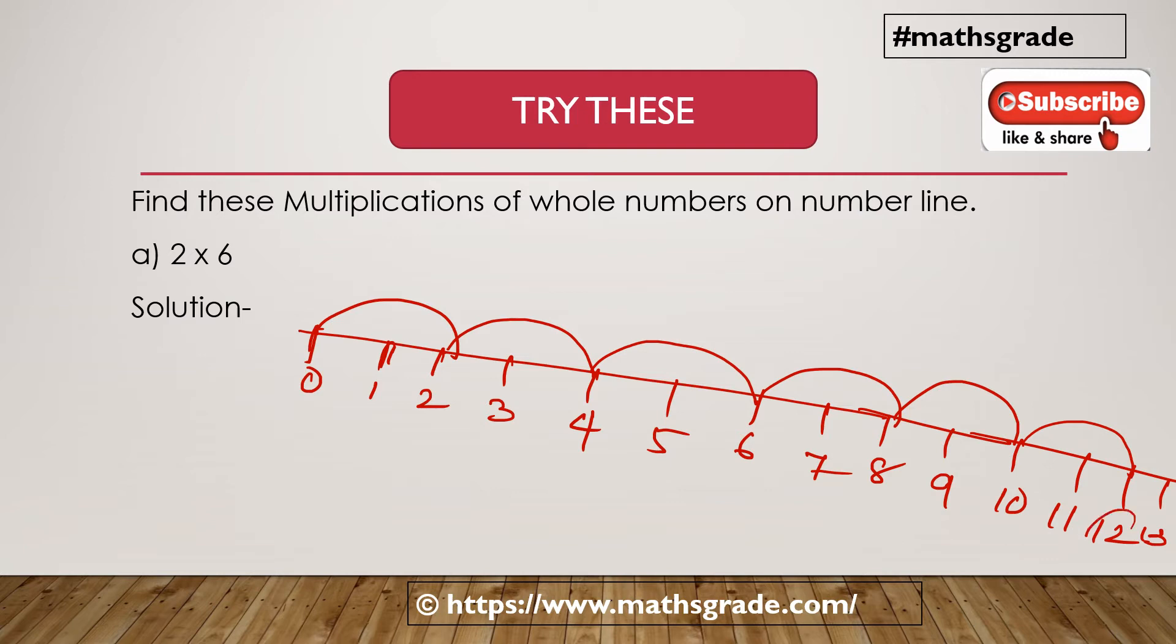Now the number is 12. So 2 multiplied by 6 is 12. This is the representation of multiplication of whole numbers, 2 multiplied by 6 which is 12 on the number line.